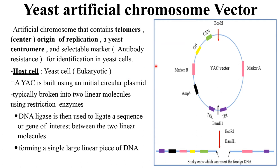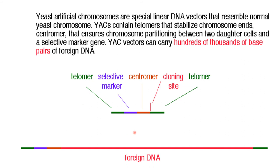To construct a yeast artificial chromosome vector, the YAC is built using an initial circular plasmid, typically broken into two linear molecules using restriction enzymes. DNA ligase is then used to ligate a sequence or gene of interest between the two linear molecules, forming a single large linear piece of DNA. YAC vectors are linear DNA vectors that resemble normal yeast chromosomes. They contain telomeres that stabilize the chromosome ends, a centromere that ensures chromosome partitioning between two daughter cells, and a selectable marker. YAC vectors can carry hundreds of thousands of base pairs of foreign DNA.